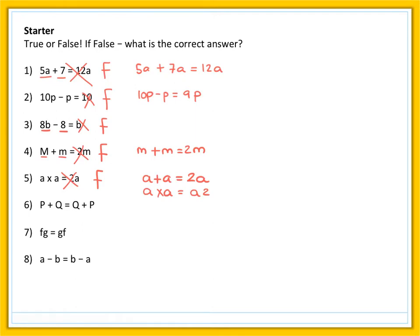Now, number six, p plus q equals q plus p. That is true. Addition is commutative. We can add these terms in either order. Number seven, fg equals gf. Also true. Multiplication is commutative. We can multiply these terms in either order.